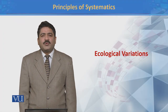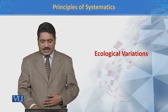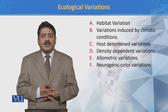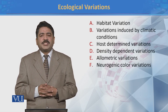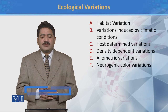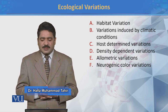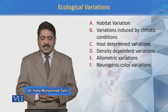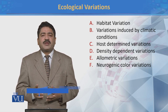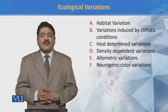In this module we will discuss different types of ecological variations. We can classify ecological variations into: habitat variations, variation induced by climatic conditions, post-determined variations, density dependent variations, allometric variations, and neurogenic color variations.